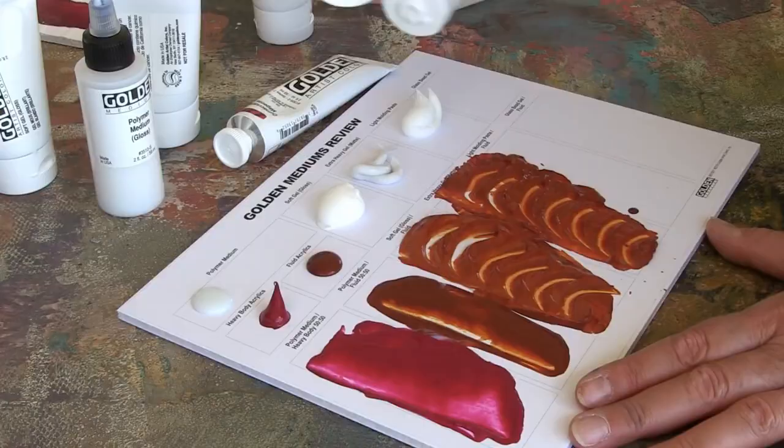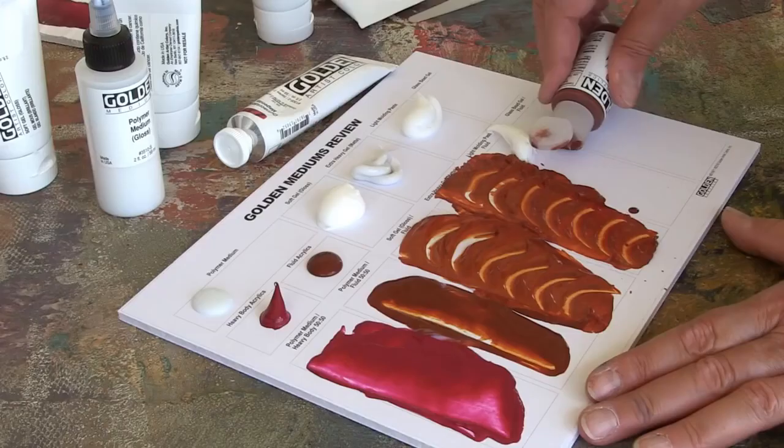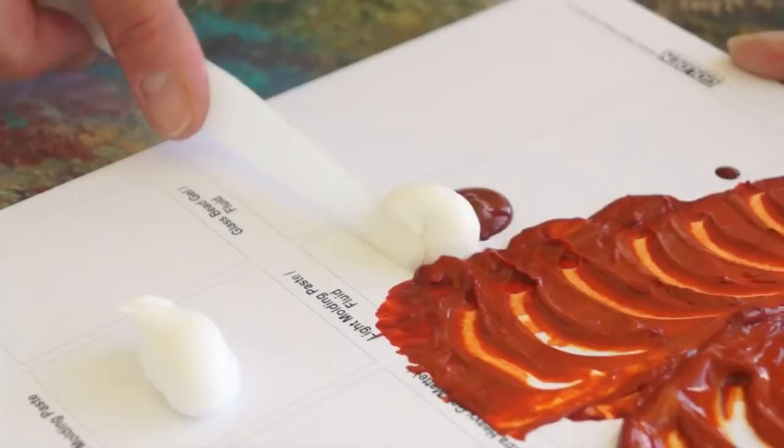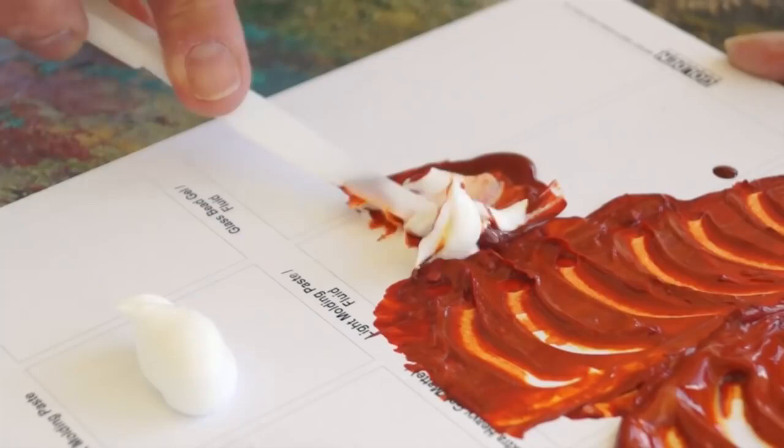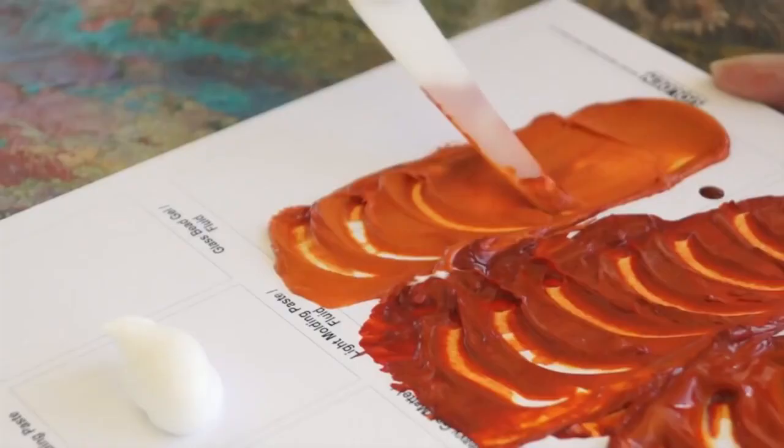Light molding paste is a product that dries to an opaque matte finish. It blends easily with color and is able to hold stiff peaks for a highly textured surface. Its light weight is beneficial when creating large textured pieces. Light molding paste is also wonderfully absorbent and is excellent as a ground.